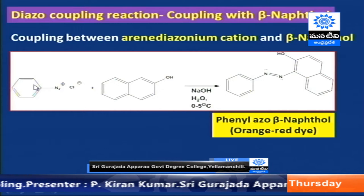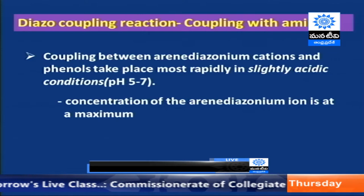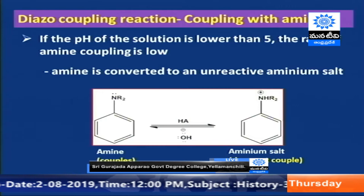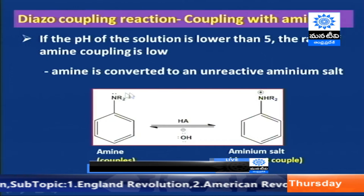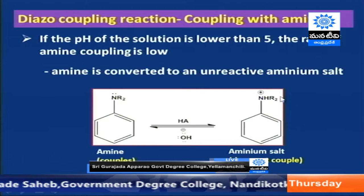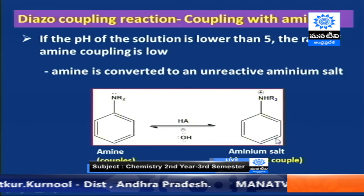In the case of coupling with amines, we have to maintain slightly acidic conditions. If the acidity is very high — pH lower than 5 — then the amine will undergo transformation to the iminium ion. These iminium ions are unreactive because the nitrogen carries a positive charge, which deactivates the ring. Therefore, iminium salts will not undergo any coupling with the diazonium ions.